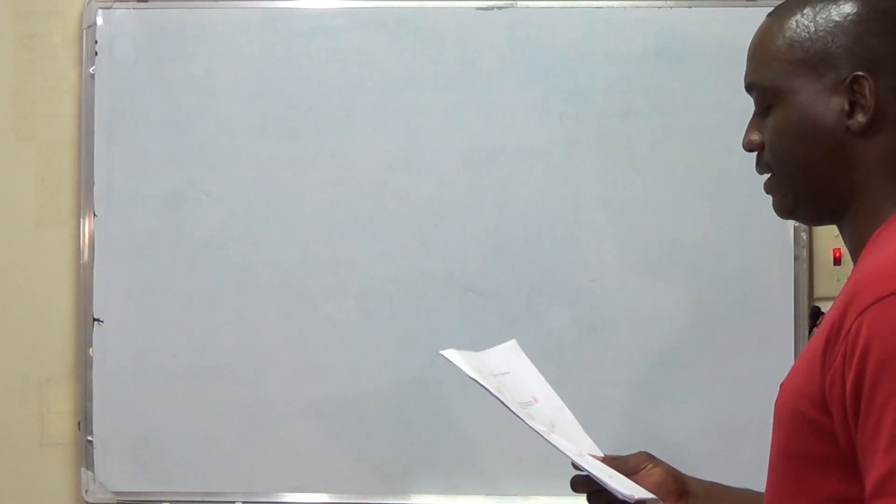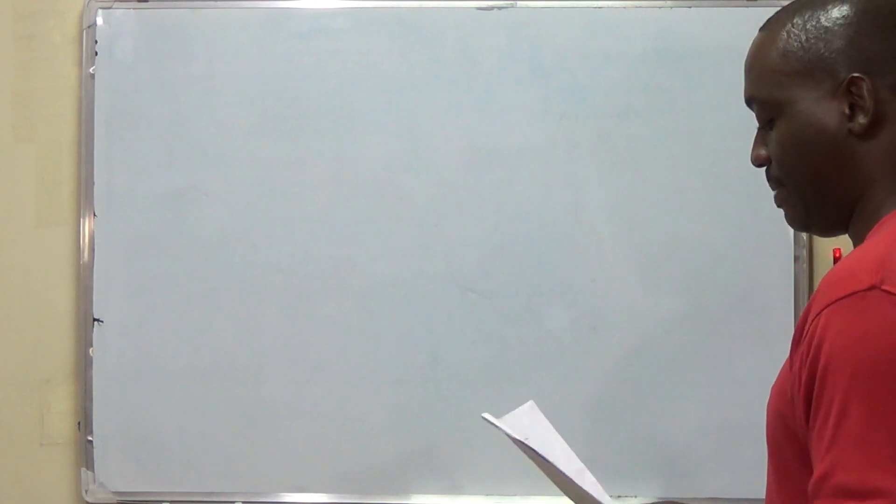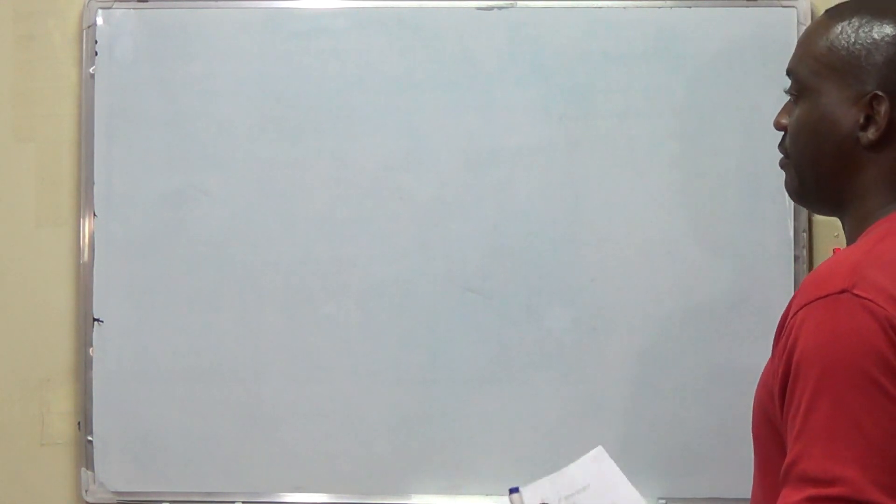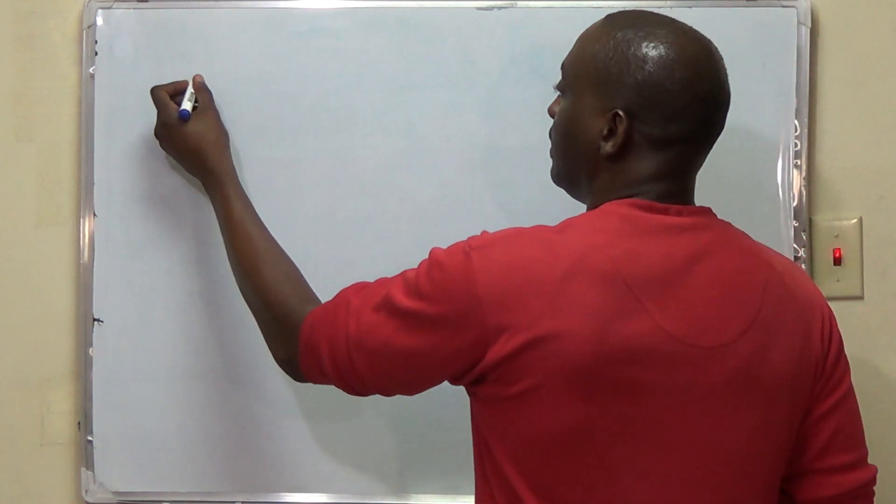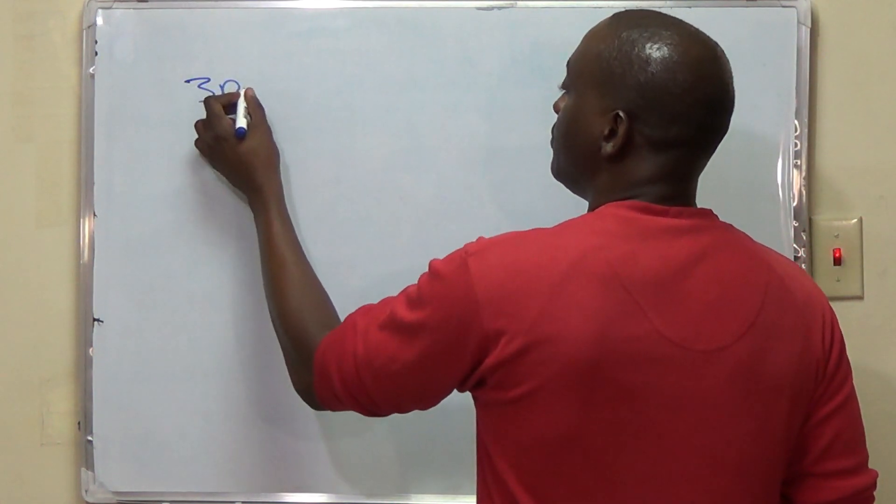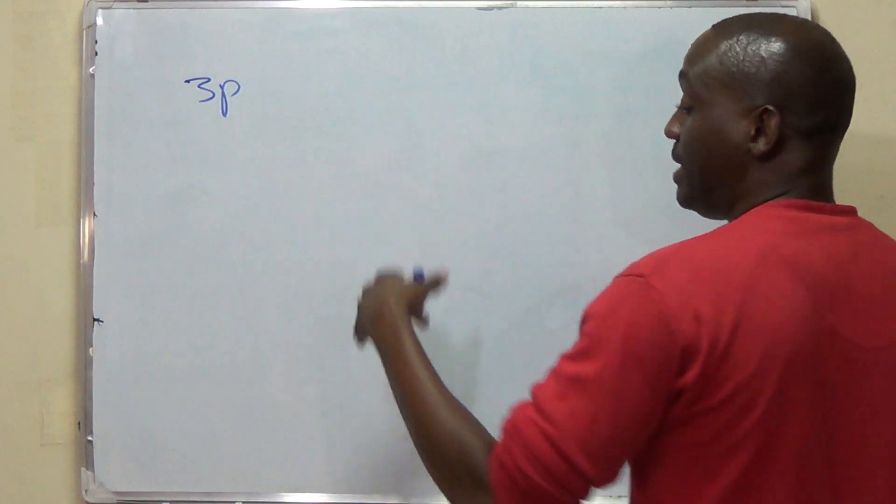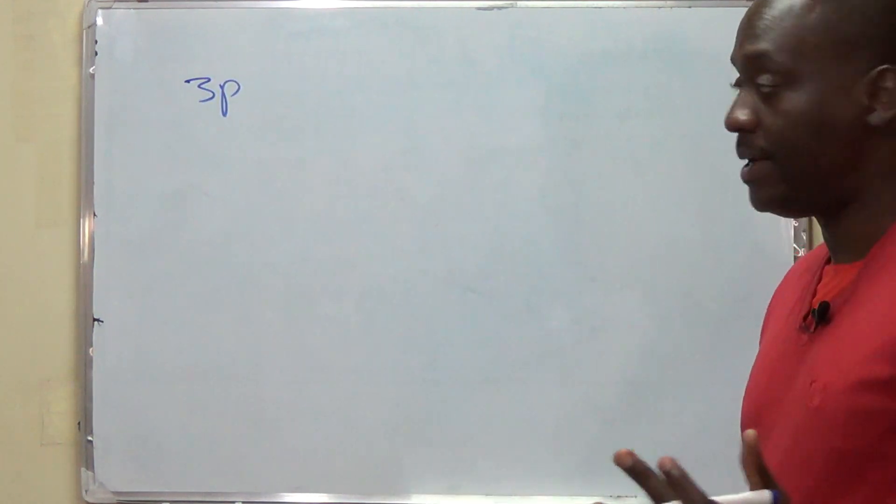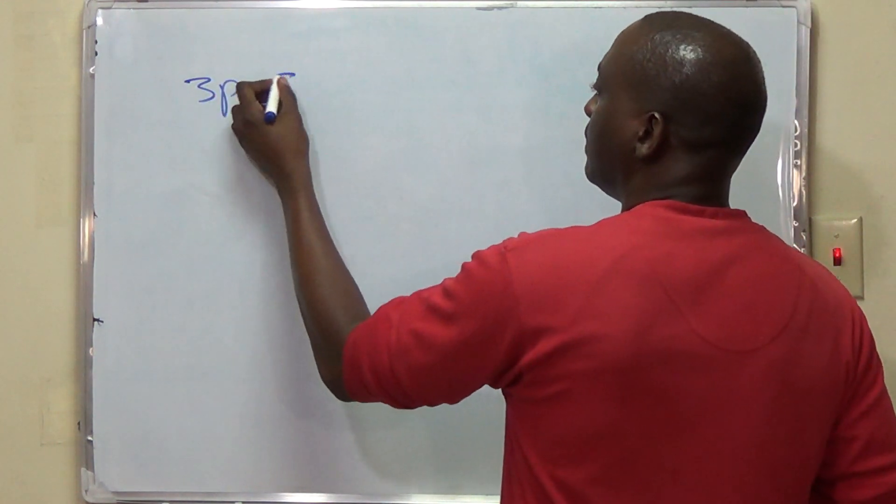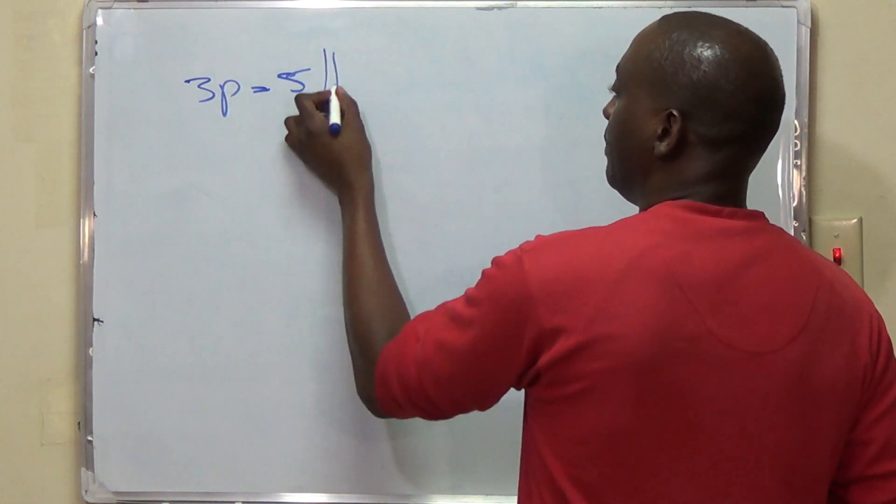So we are told additionally that the total weight of 3 pineapples is 5 pounds. In other words, let us say 3P, where P represents number of pineapples, is equal to 5 pounds.